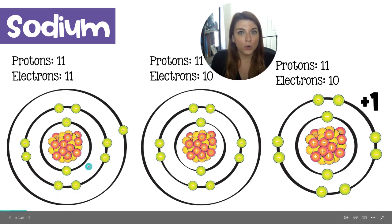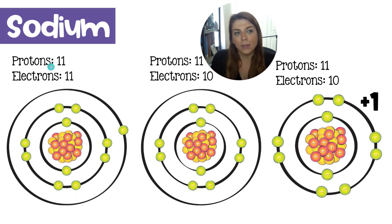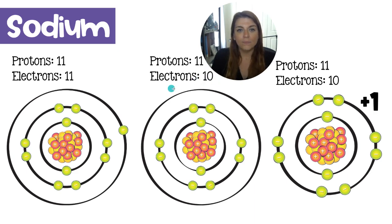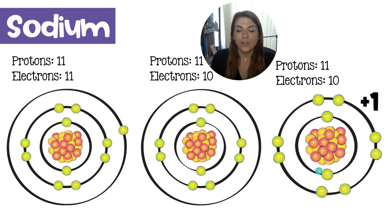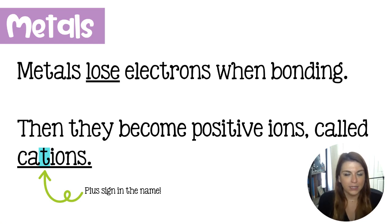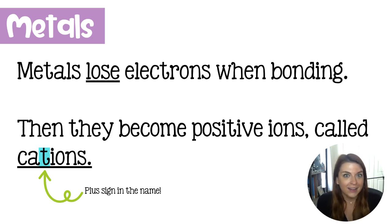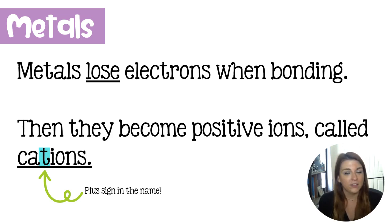This right here is a diagram of a sodium atom. I know it's an atom because it has the same number of protons and electrons. But if sodium were to lose that last valence electron and give it to some other atom, then it would become a plus one ion, and you can see that it has shrunken. It shrinks when it loses that last electron because the new valence shell is level two, no longer level three. Metals lose their valence electrons when bonding, and when that happens they will become a positive ion, which is called a cation. There is literally a plus sign in the name cation to help you remember that cations are positive ions.